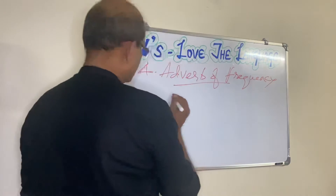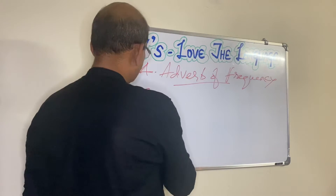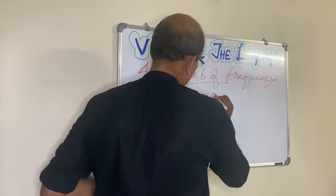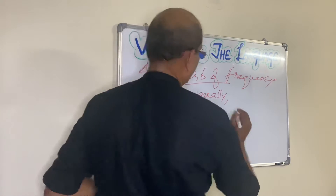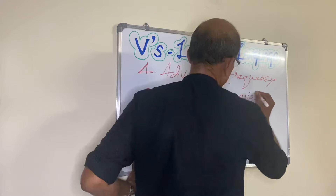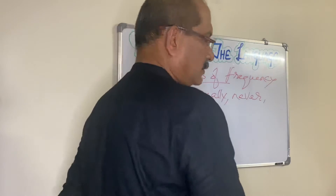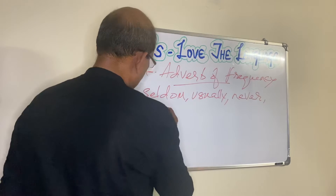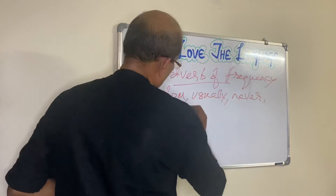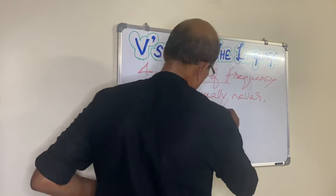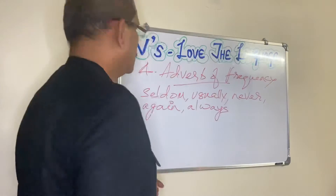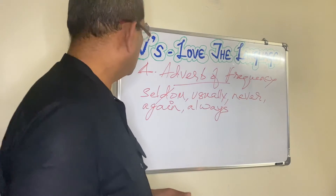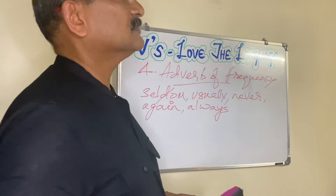Let's go straight. Words for adverb of frequency: seldom, usually, never, again, always. Let's form a sentence with the first example, which is 'seldom'. We all must have heard the very popular proverb — barking dog seldom bites.